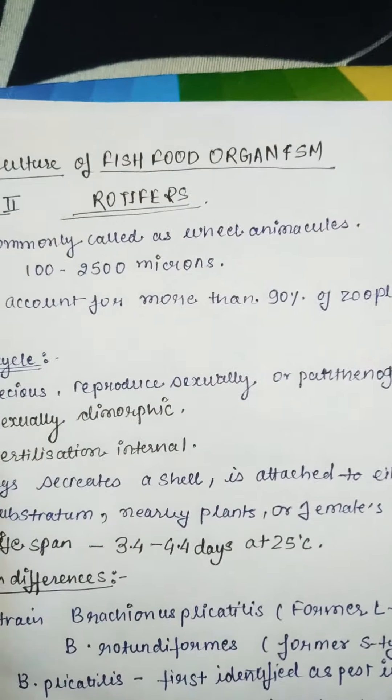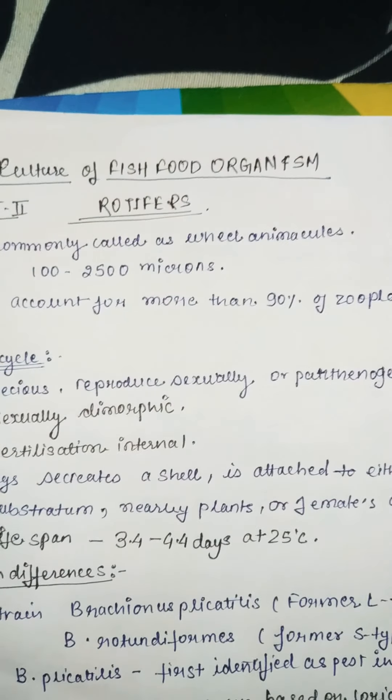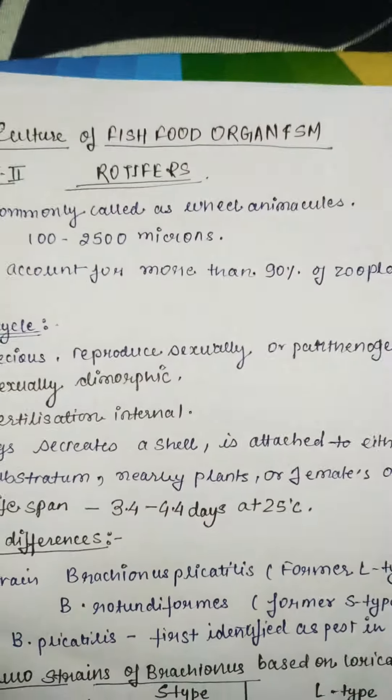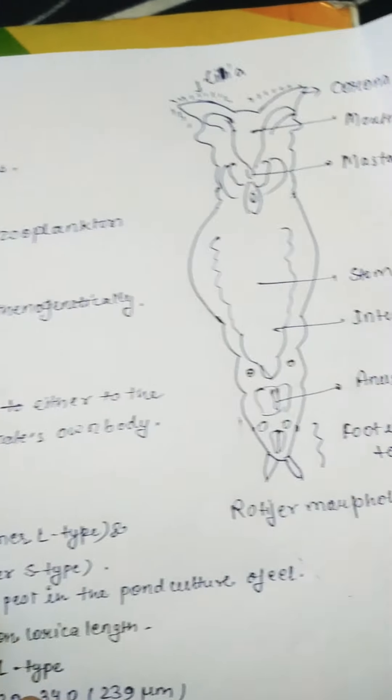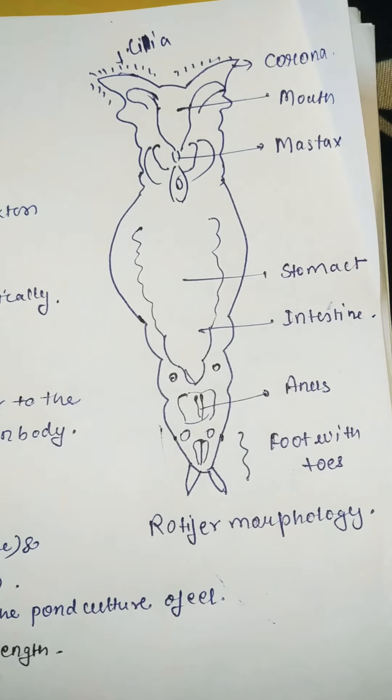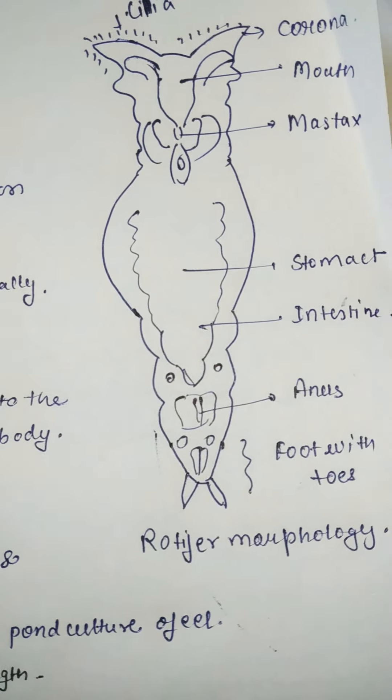The culture of fish food organisms - we will continue by discussing rotifers, which is one of the zooplankton widely known for fish food. This is a diagram of the rotifer morphology, here we will see.